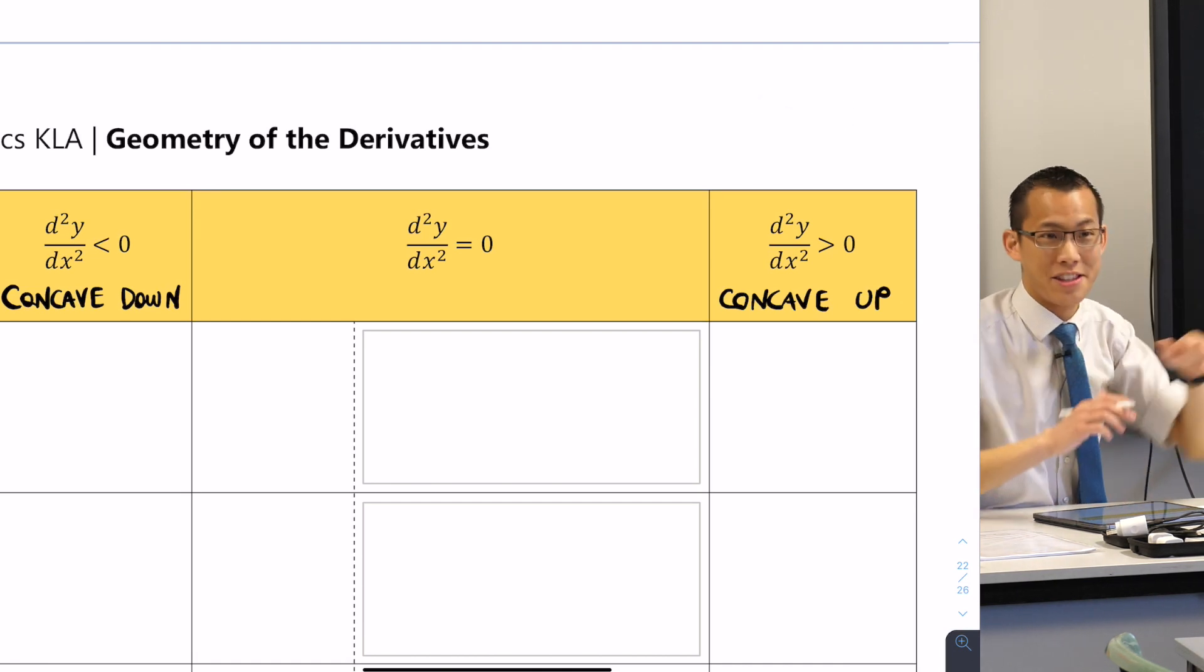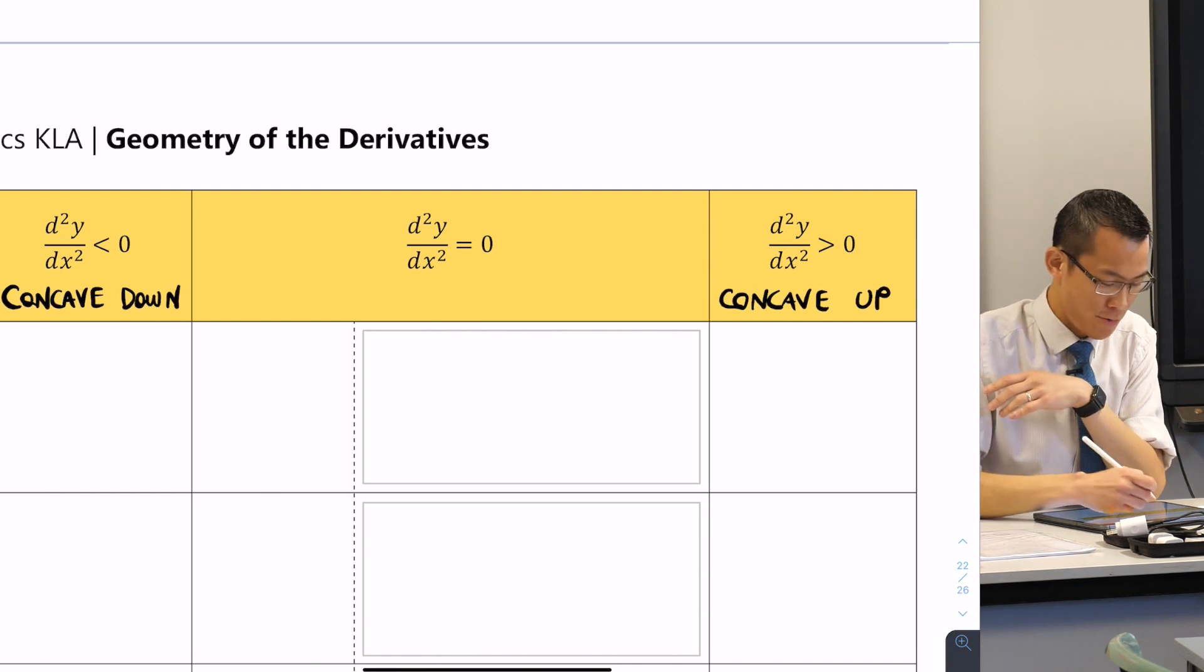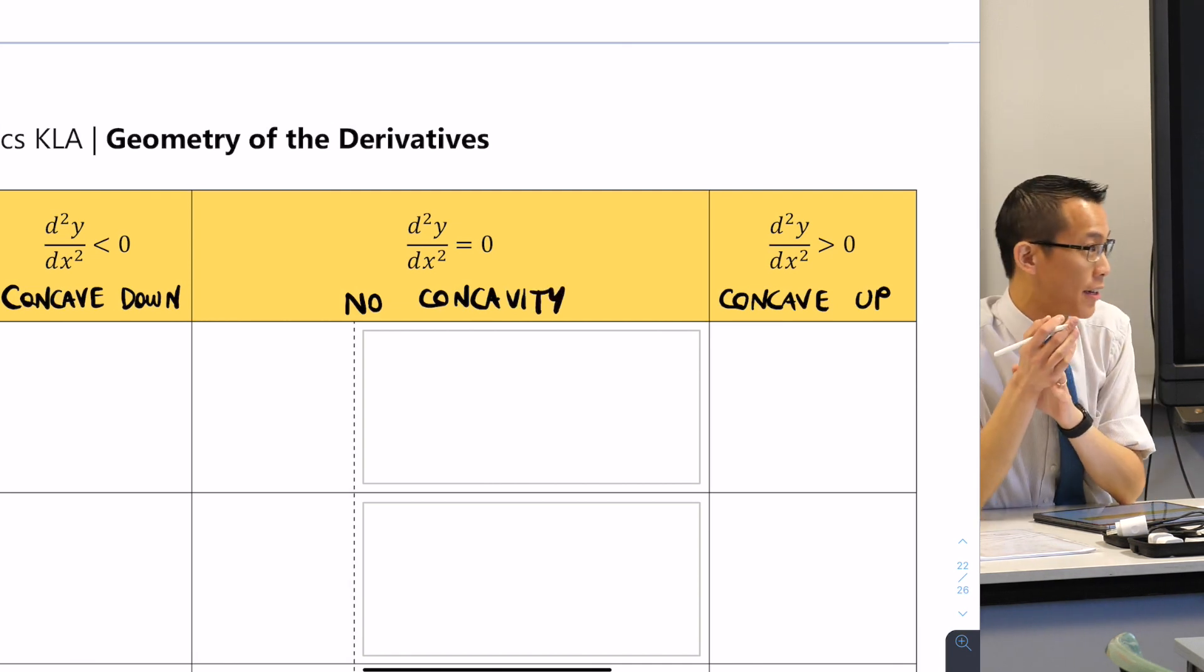Now, I said we'd come back to the middle. If you're not concave up and you're not concave down, you have no concavity.